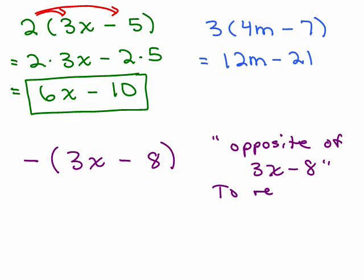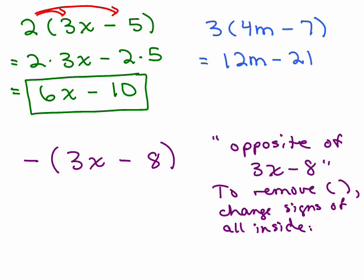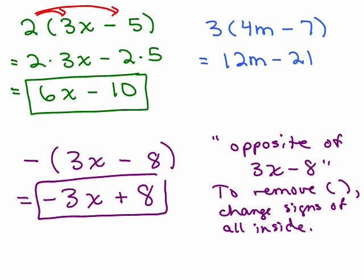To remove parentheses, change signs of all inside, alright? So, I had just a positive 3X, I'm going to make that a negative 3X. I had a minus 8, I'm changing that to a plus 8, and that's all there is to it if it's just a minus sign in front of there.